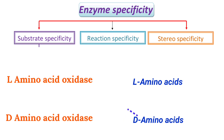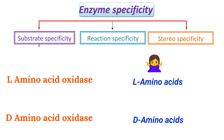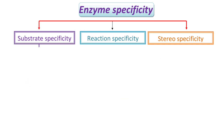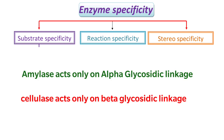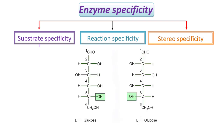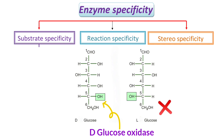If you add a D-amino acid to L-amino acid oxidase, it will not react. Similarly, D-amino acid oxidase cannot act on L-amino acids. Other examples: amylase acts only on alpha glycosidic linkages, whereas cellulase acts only on beta glycosidic linkages. D-glucose oxidase acts only on D-glucose but will not act on L-glucose. This is stereospecificity.